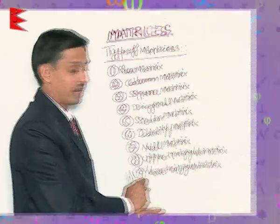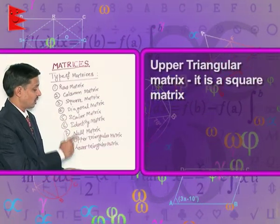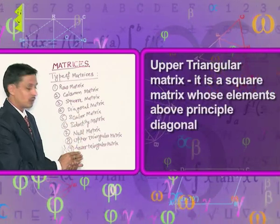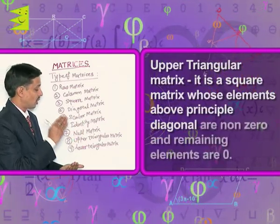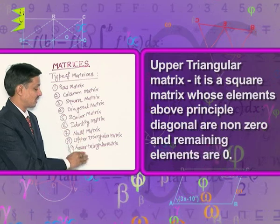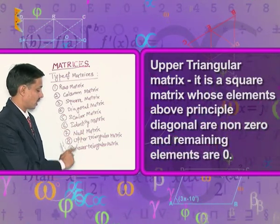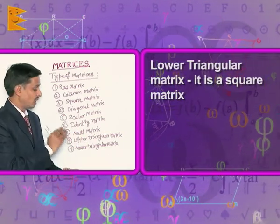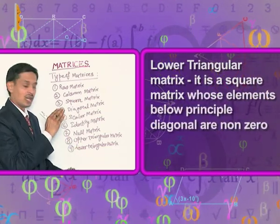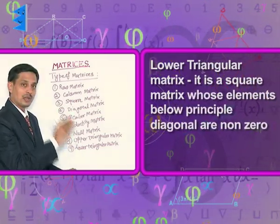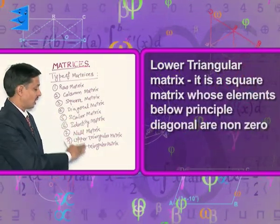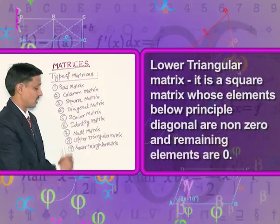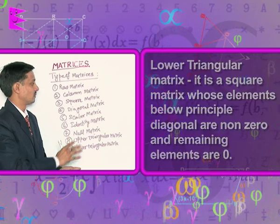Upper triangular matrix is that square matrix in which the elements above the principal diagonal are non-zero and the remaining elements are 0, known as the upper triangular matrix. Whereas the lower triangular matrix is that square matrix in which the elements below the principal diagonal are non-zero and the remaining elements are 0, known as the lower triangular matrix.